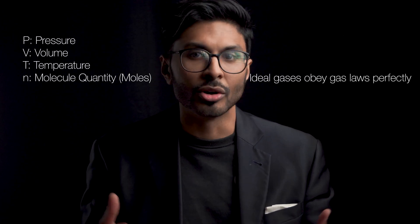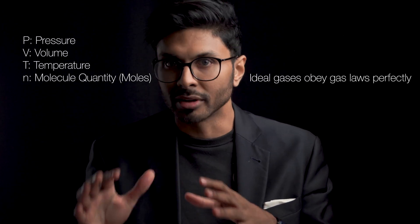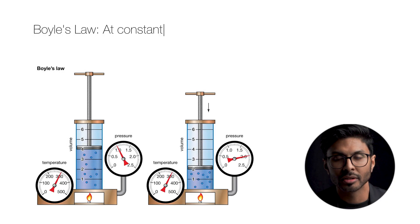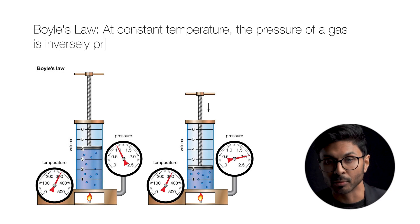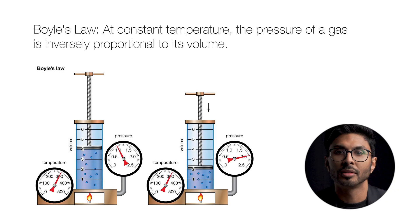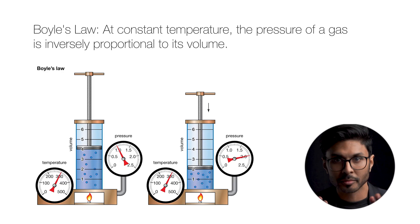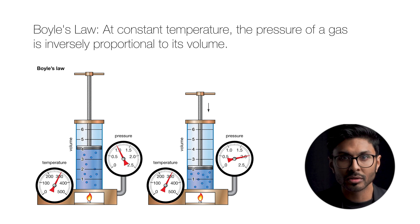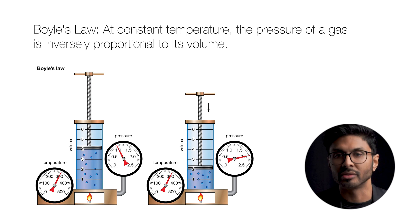The first gas law is Boyle's Law, which shows the relationship between pressure and volume. At constant temperature, the pressure of a gas is inversely proportional to its volume — more pressure means less volume, and less volume means more pressure. Think of squeezing a balloon: you're reducing the volume and the pressure inside increases.